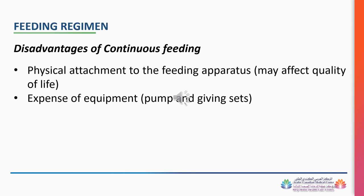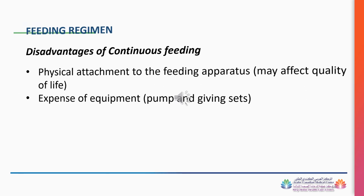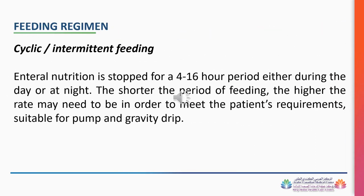Disadvantages of continuous feeding: physical attachment to the feeding apparatus may affect quality of life, and it requires expensive equipment such as pumps and giving sets. Cyclic intermittent feeding: enteral nutrition is stopped for a 4–16 hour period either during the day or at night. The shorter the period of feeding, the higher the rate may need to be to meet the patient's requirements. Suitable for pump and gravity drip.